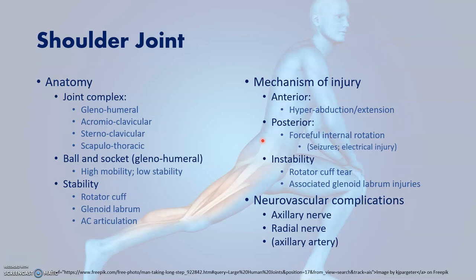The nerves commonly affected by anterior dislocations include the axillary and radial nerves, much more commonly the axillary nerve. Both of these nerves are part of the posterior cord, which is in direct contact with the anterior surface of the joint. Therefore, when the joint dislocates, it puts pressure and traction on those nerves. Similarly, the axillary artery is sometimes affected, which could lead to arterial spasm or sometimes even arterial tears.